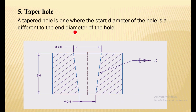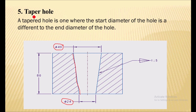Next is the taper hole. A taper hole is one where the start diameter of the hole is different from the end diameter. There is a uniform reduction in diameter throughout the taper hole. It is indicated by a specific symbol, and in this example the hole is uniformly decreased in a ratio of 1 to 5.